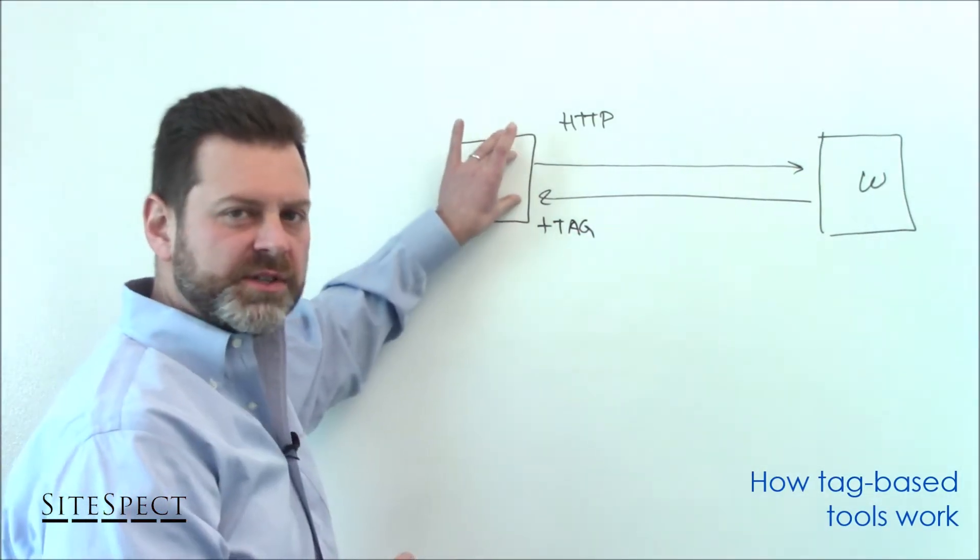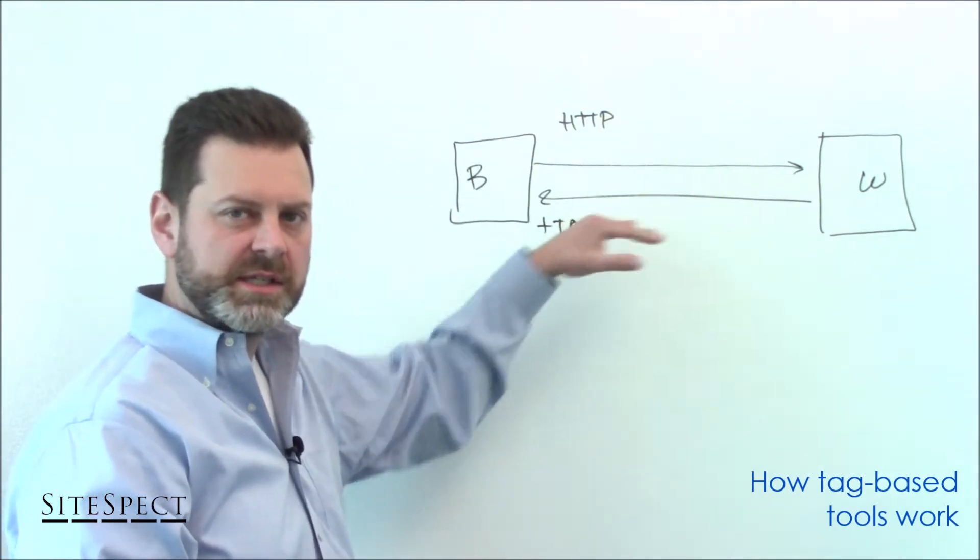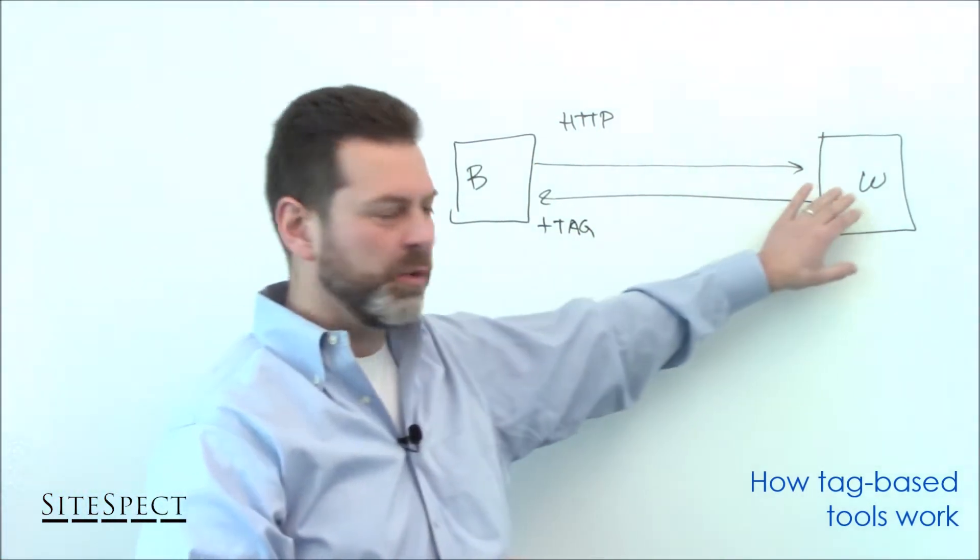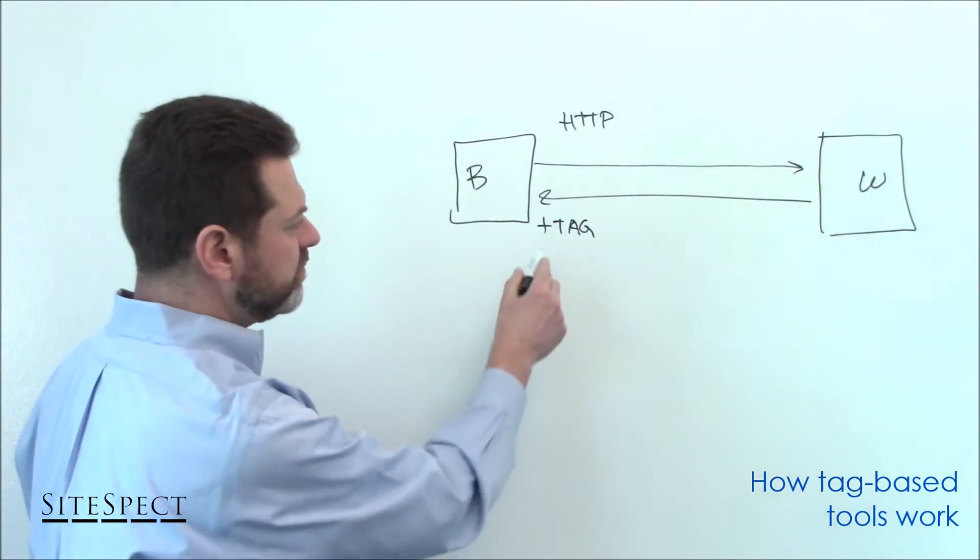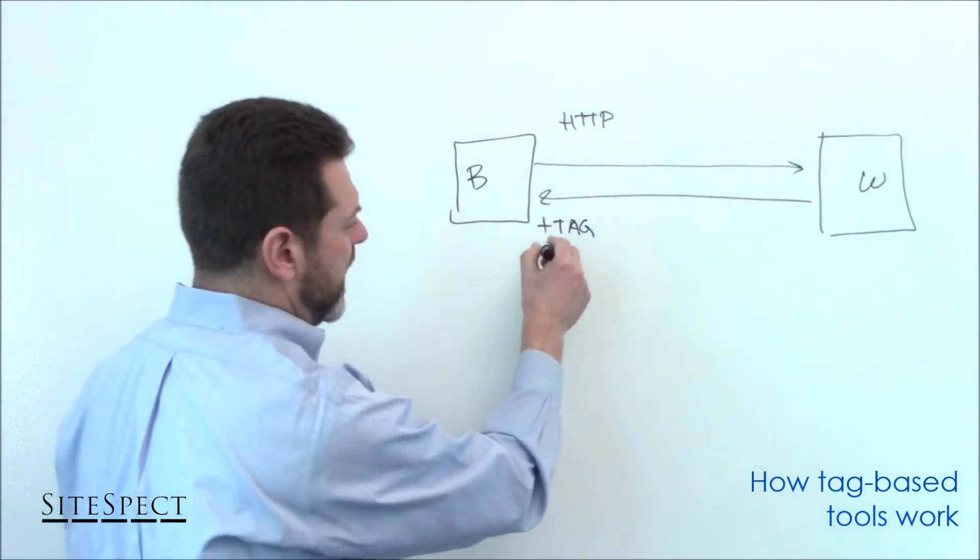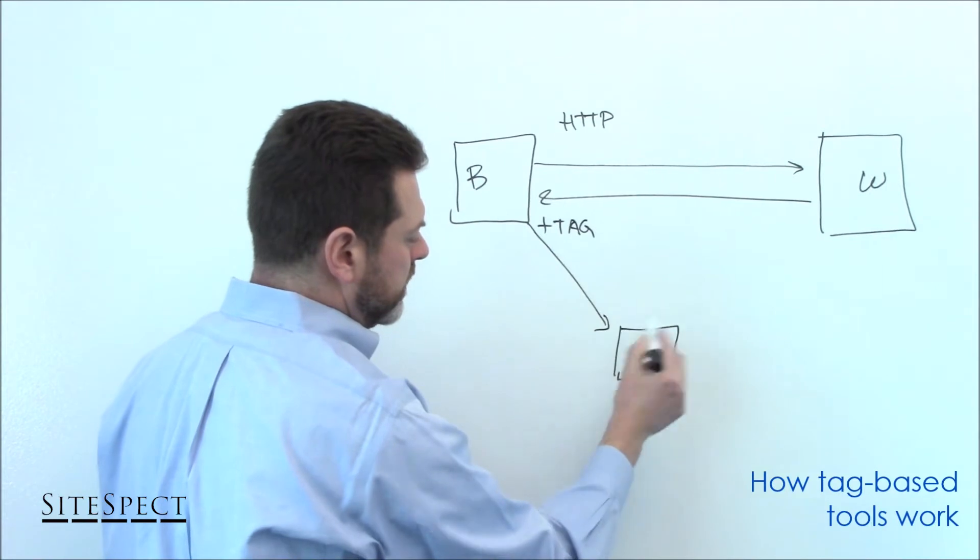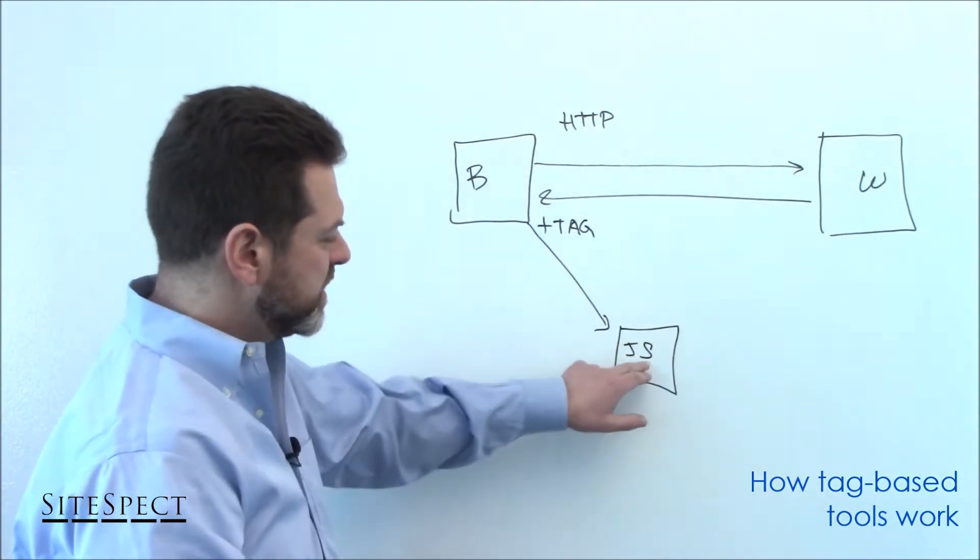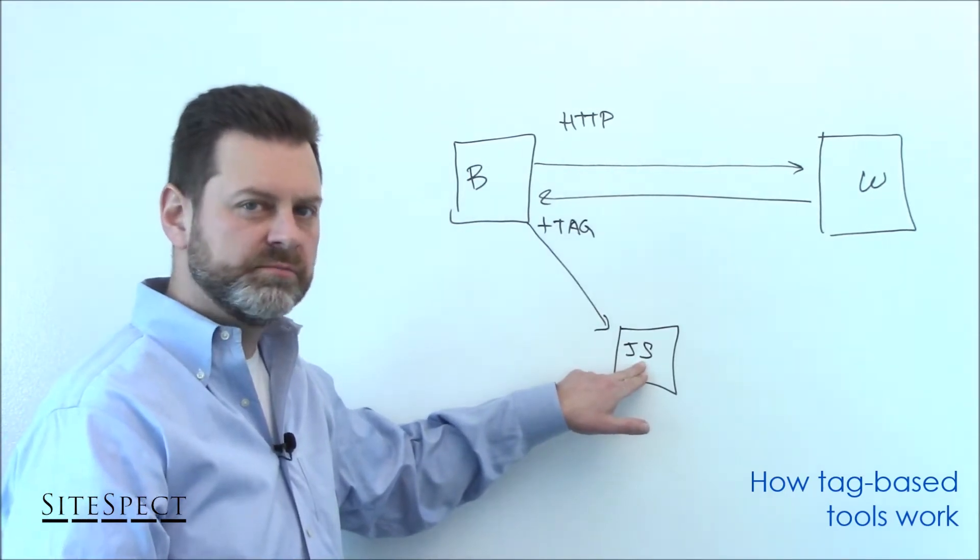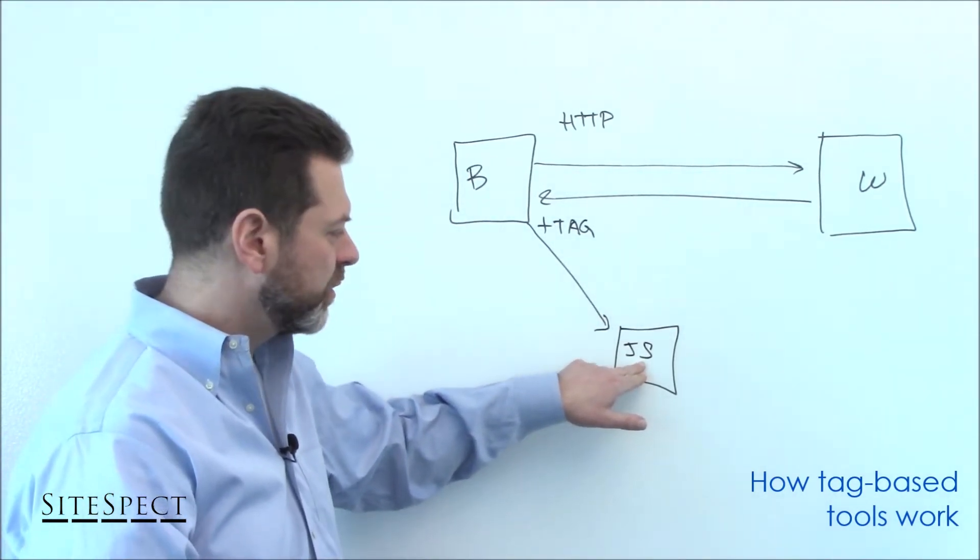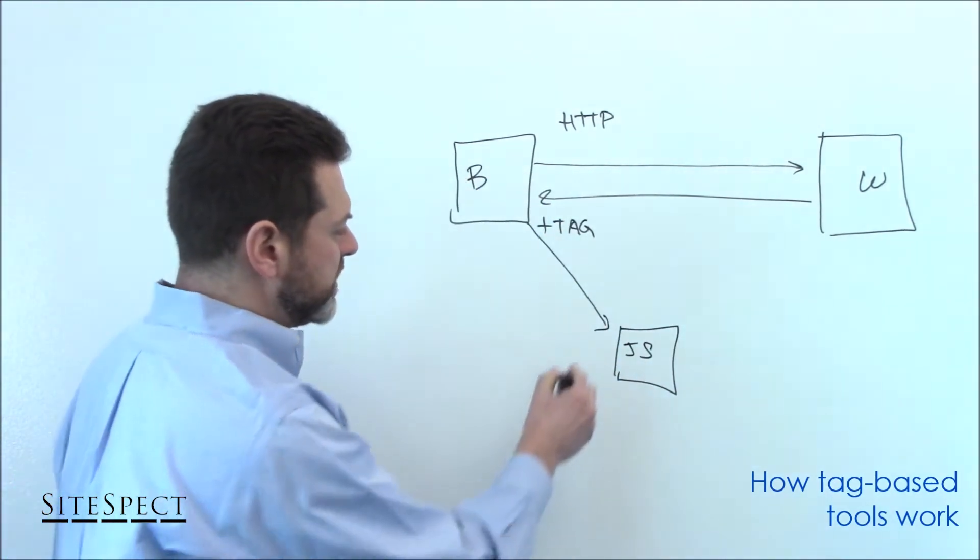And when the browser starts to render its HTML and the images and CSS and all the other stuff that it got served from the website or potentially other subdomains of that website, it sees that JavaScript tag, and it now has to load the tag from the JavaScript server. And this might be just as some name brand examples, Adobe target, optimizely, monetate, so on and so forth.